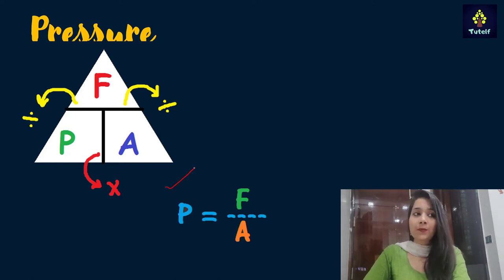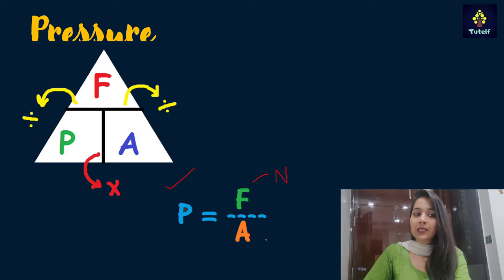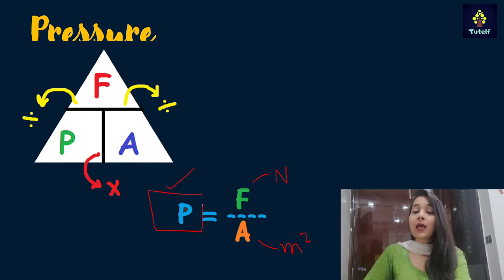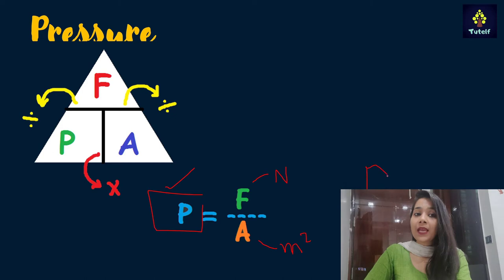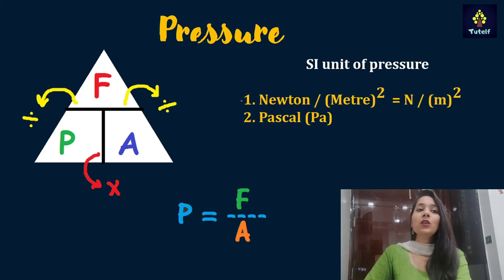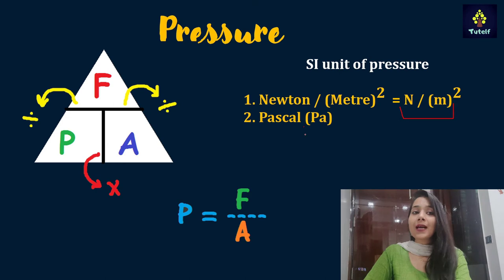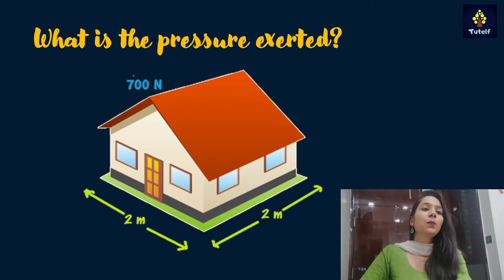The formula we'll use most in this chapter is pressure equals force divided by area. The unit of force is newton and the unit of area is meter square, so the unit of pressure is newton per meter square. There is another unit for pressure — pascal. The SI unit of pressure is 1 newton per meter square, also written as Pa, where P is capital and a is small, named after the scientist Pascal.